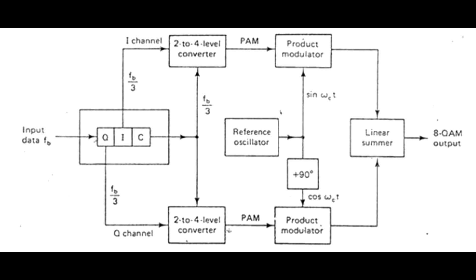Compared to 8PSK, 8QAM has the omission of the inverter between the C channel and Q product modulator. The I and Q bits determine the polarity of the PAM signal at the output of the 2-to-4 level converters, and the C channel determines the magnitude. The C bit is fed uninverted to both I and Q channel 2-to-4 level converters, so the magnitudes of I and Q PAM signals are always equal.